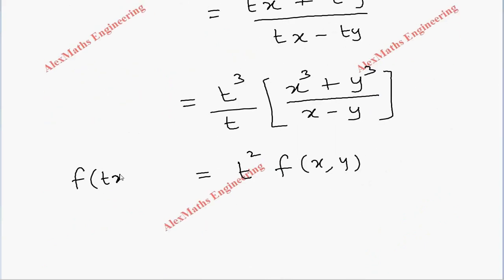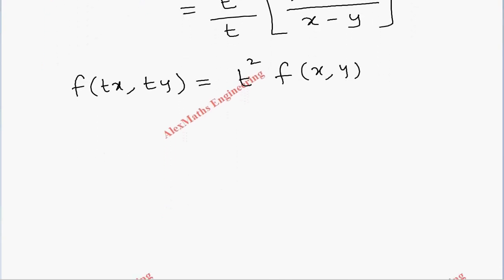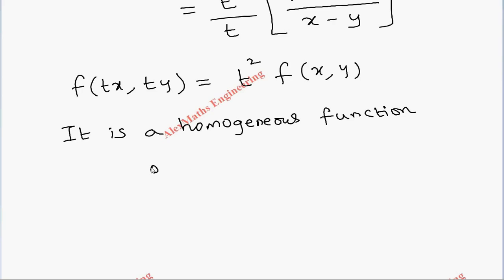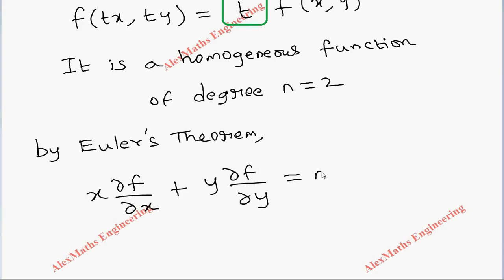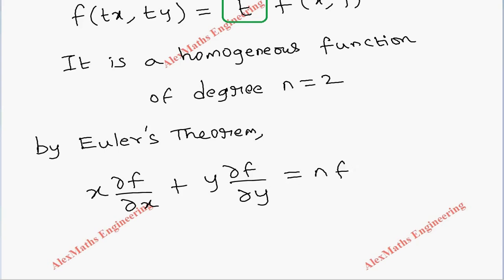And on the other side we have f(tx, ty). From this we can say it is a homogeneous function of degree n equal to 2, because we have t squared here. Now by Euler's theorem we can say x into ∂f/∂x plus y into ∂f/∂y equal to nf.